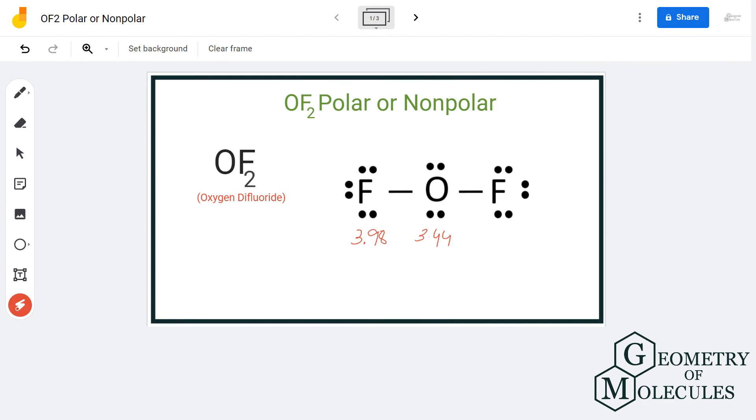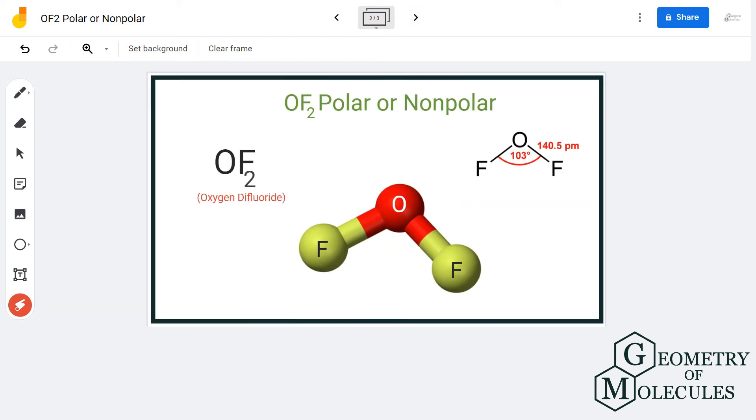These two lone pairs in the molecule cause distortion in the shape, due to which the dipole moments are not cancelled out and there is a net dipole moment in this molecule.